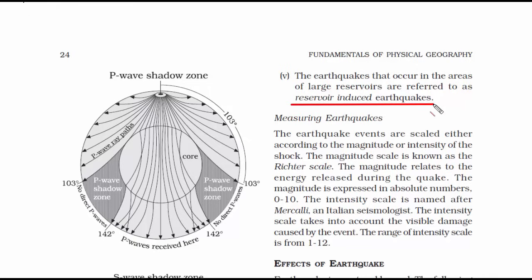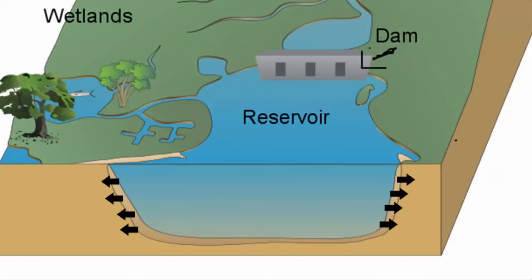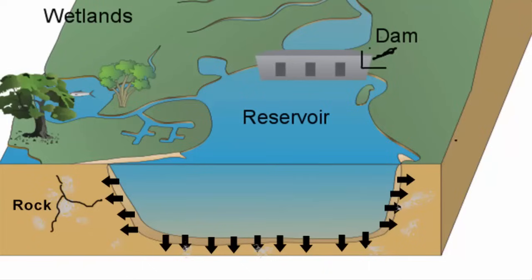The fifth type is reservoir induced earthquakes — earthquakes that occur in areas of large reservoirs. When reservoirs store large quantities of water, that water creates pressure on the walls and surface of the reservoir. Those walls in turn create pressure on nearby rocks. If there is a fault — a crack in the crust — nearby to the reservoir, that pressure will push large chunks of rocks and the fault may increase in size, resulting in a reservoir induced earthquake.